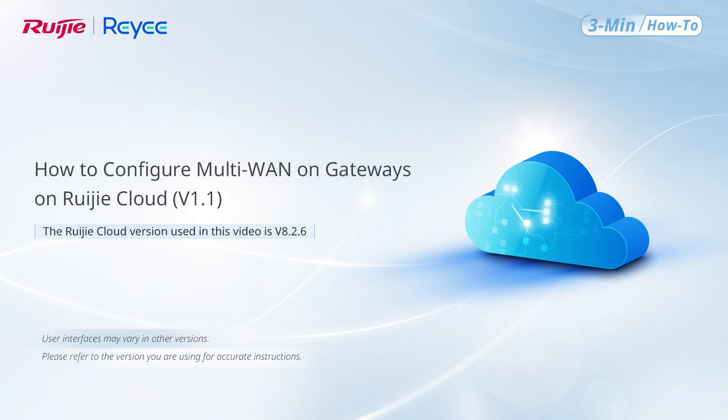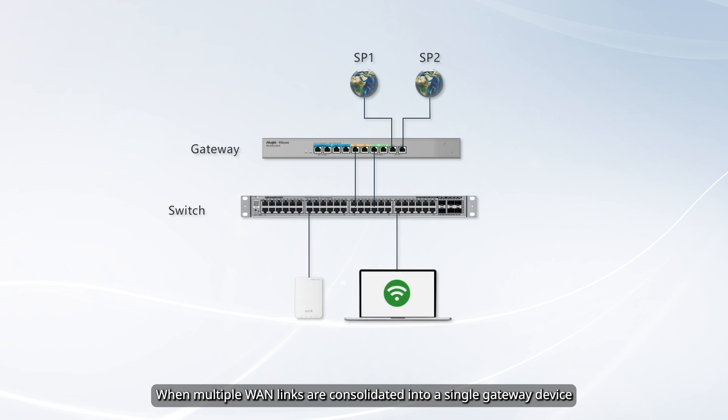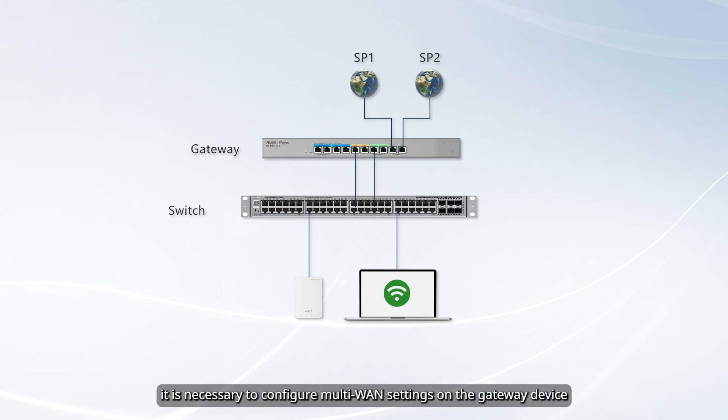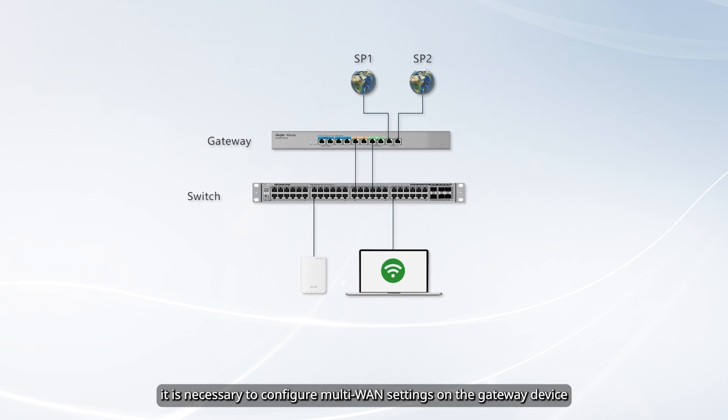This video demonstrates how to configure multi-WAN on Rui Jia Cloud. When multiple WAN links are consolidated into a single gateway device, to ensure the availability and utilization of these WAN links, it is necessary to configure multi-WAN settings on the gateway device.